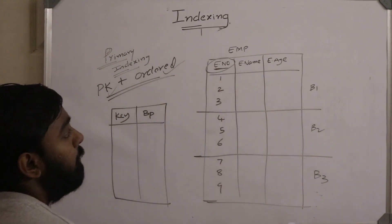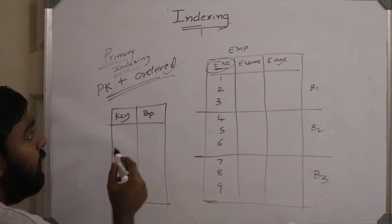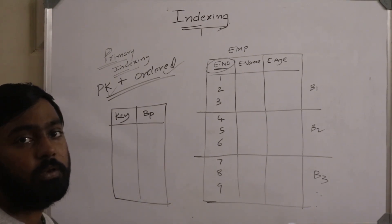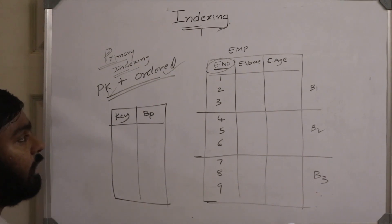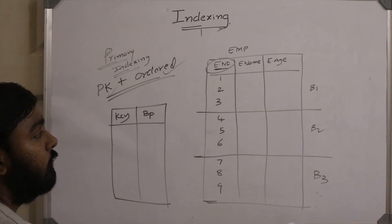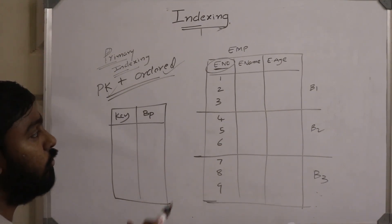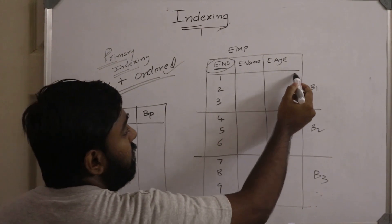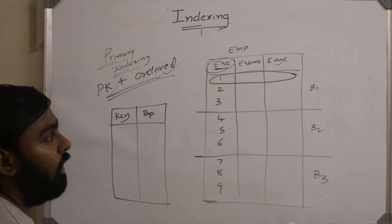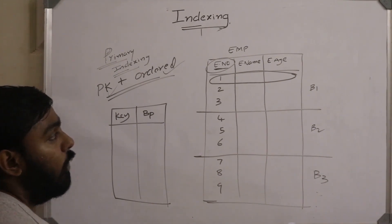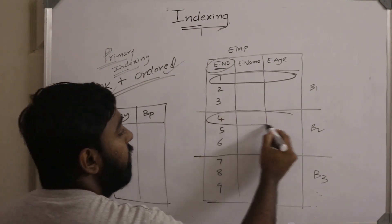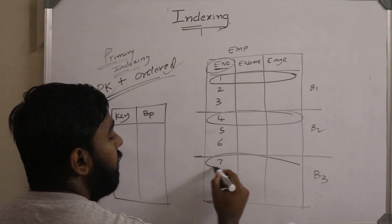In primary indexing it is a sparse index. A sparse index means we create an index only for a few records, not for all the records. How do we choose these few records? These are called anchor records, also called block anchors. A block anchor means the first record in every block.